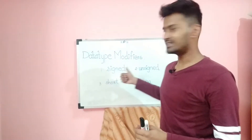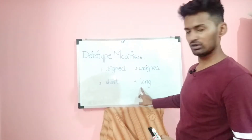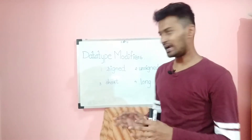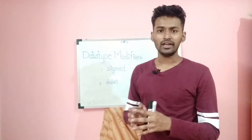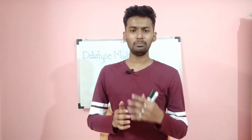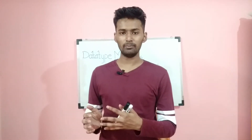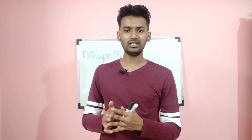Moving towards data type modifiers — there are four data type modifiers in C: signed, unsigned, short, and long. Many people get confused that long is a data type in C, but it is a data type modifier. A data type modifier is a keyword which, when used in front of a variable, changes the base type of the variable and yields a new type. Basically, it changes the range of the variable, and if the range changes, the size or storage of the variable will also change.